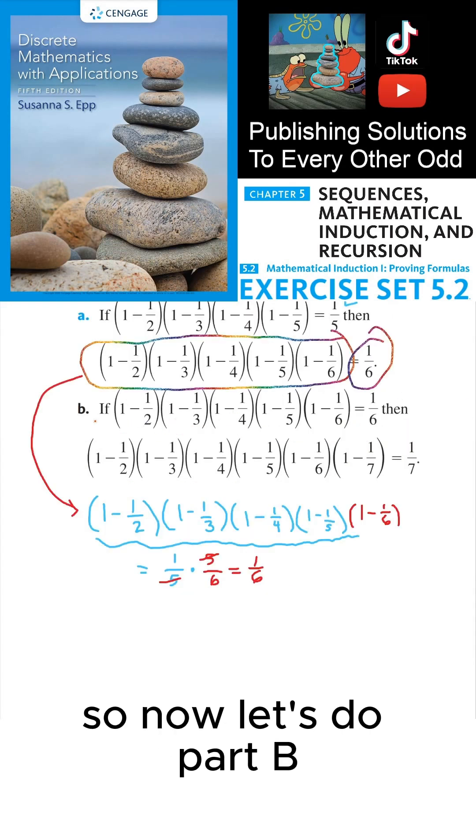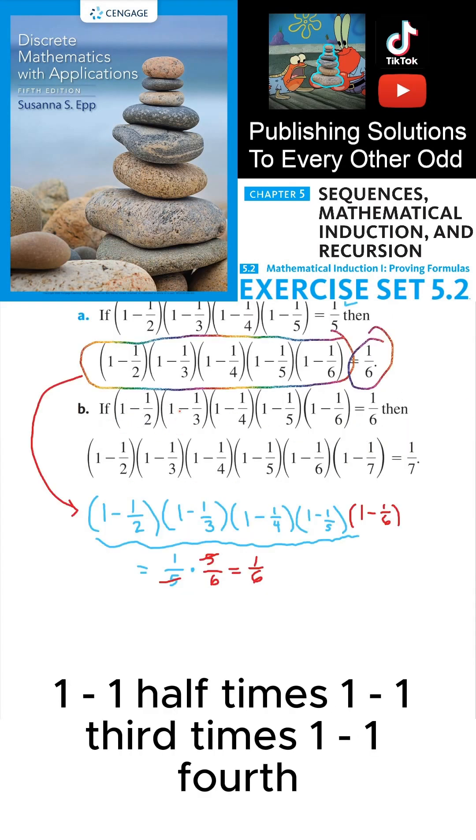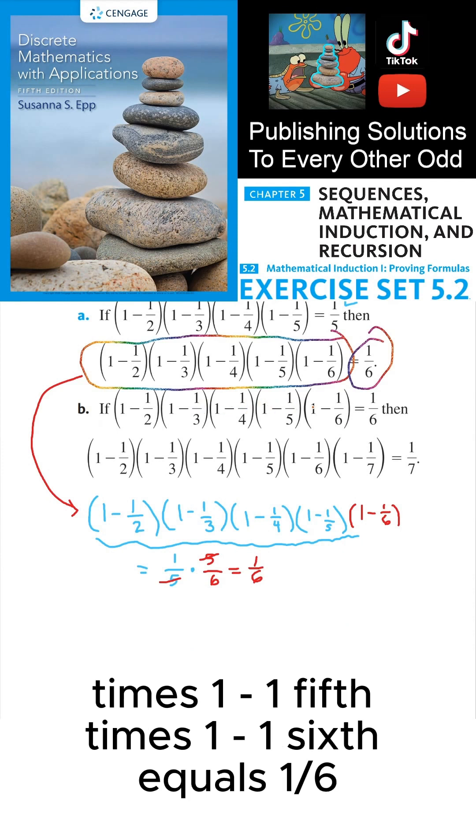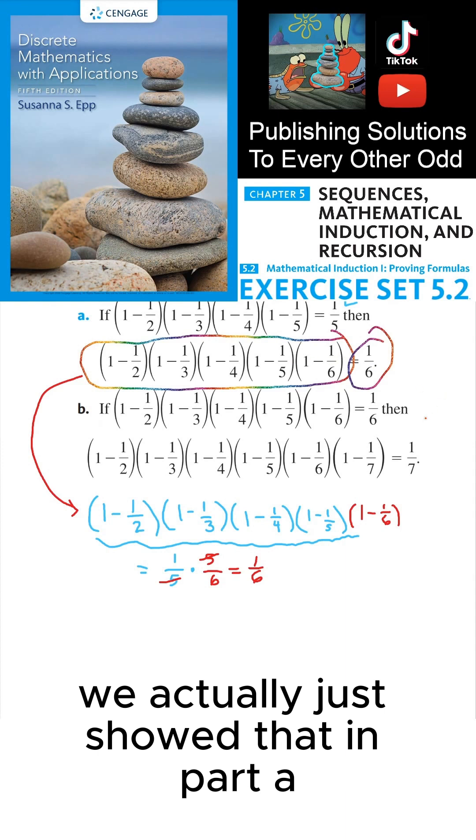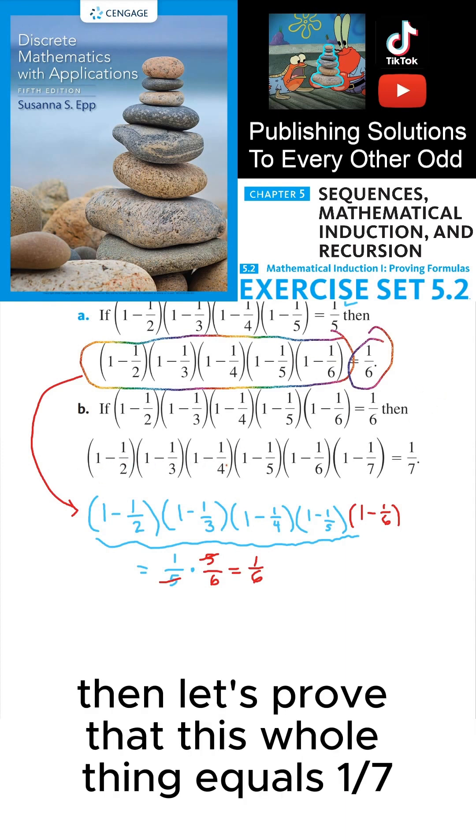So now let's do part B. This says if (1 minus 1/2) times (1 minus 1/3) times (1 minus 1/4) times (1 minus 1/5) times (1 minus 1/6) equals 1/6, we actually just showed that in part A, then let's prove that this whole thing equals 1/7. Now again,